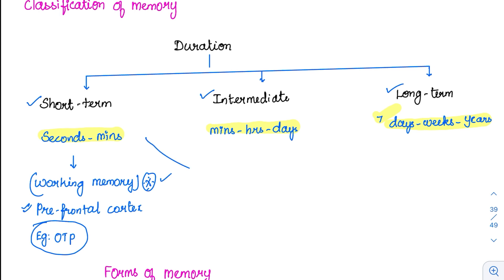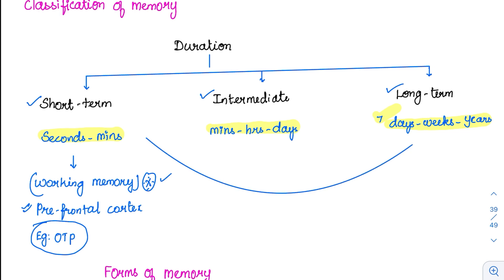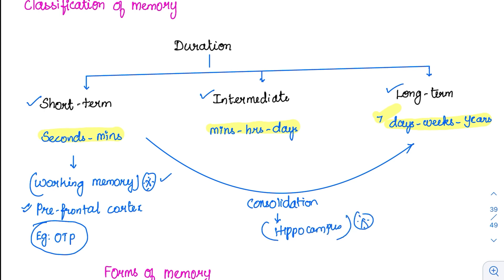The most important part is the conversion of short-term to long-term memory. This can happen in sleep only, and this process is called consolidation. The part involved in this conversion is the hippocampus — it is the most important part involved in converting short-term to long-term memory.